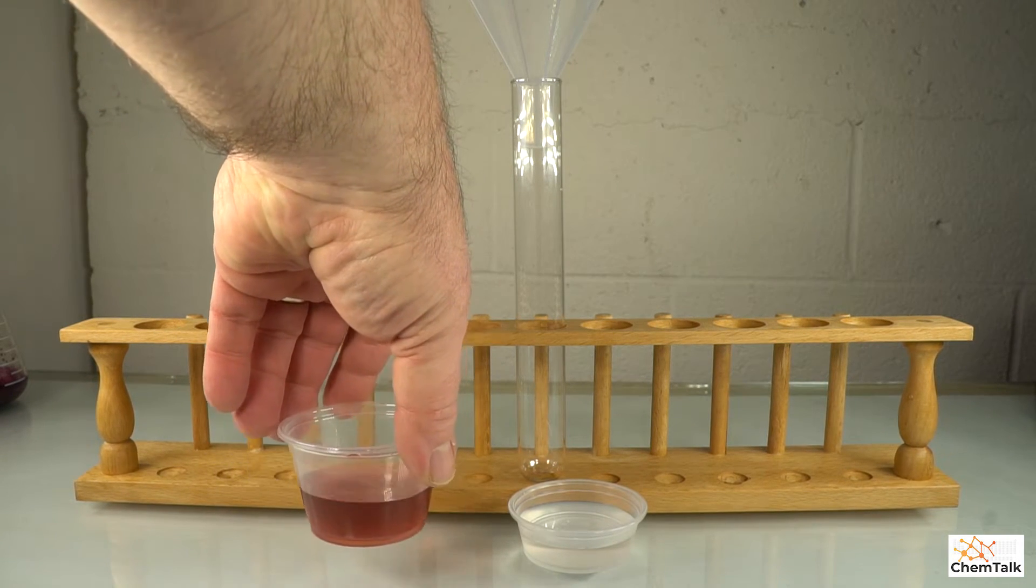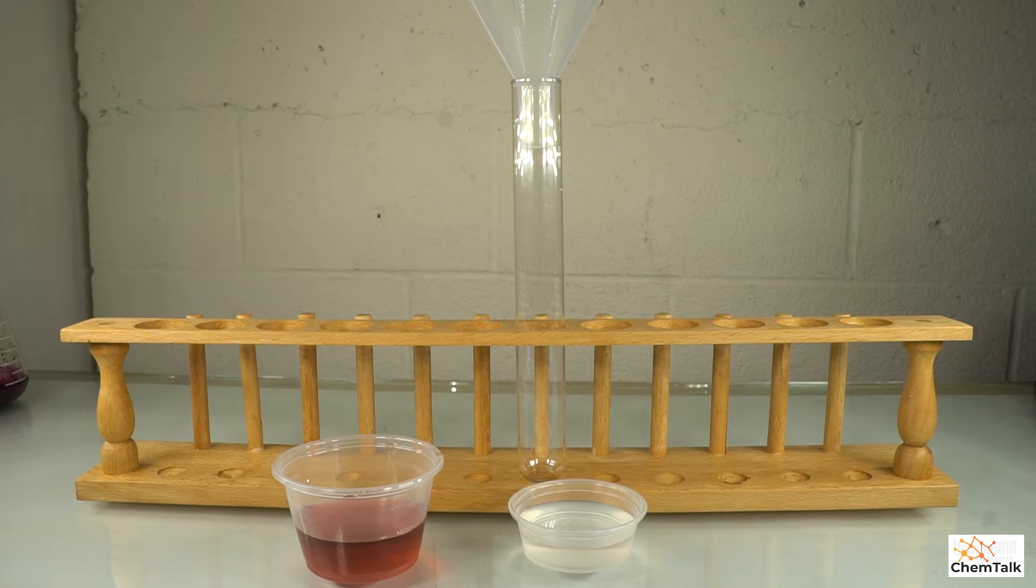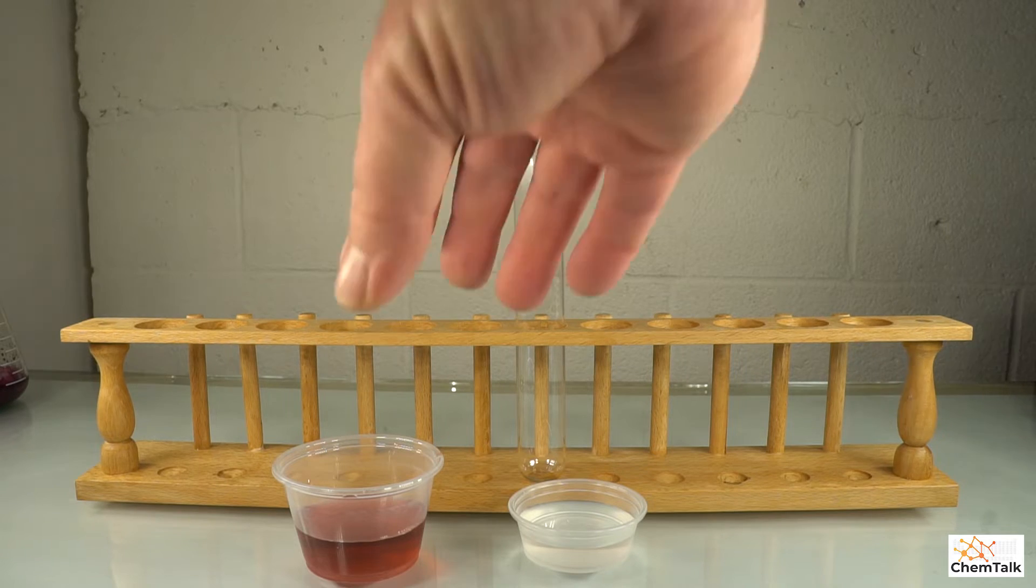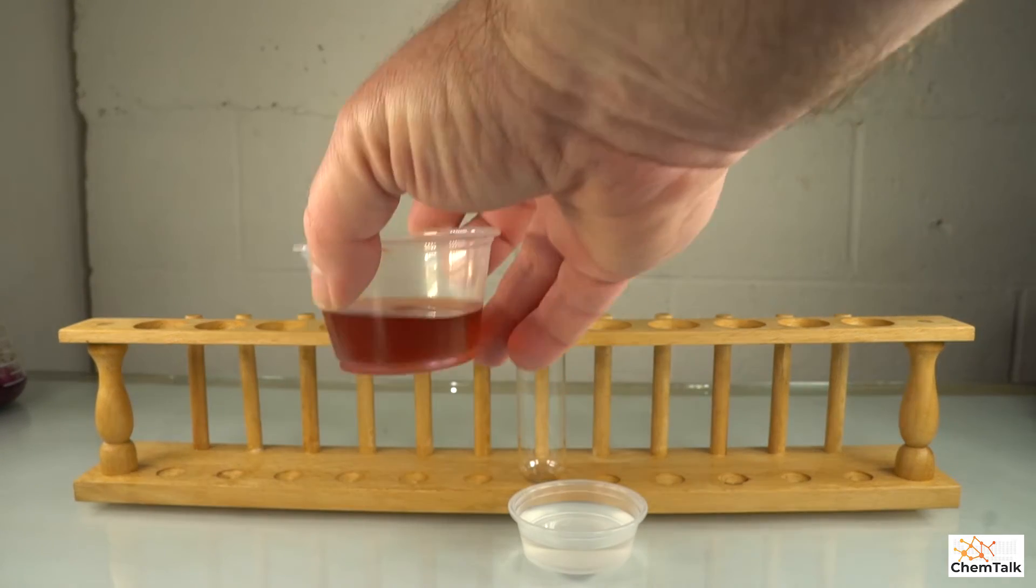And here we have 3.5 grams of cobalt sulfate with 40 milliliters of water. We're going to mix them and I'm going to show you what happens.